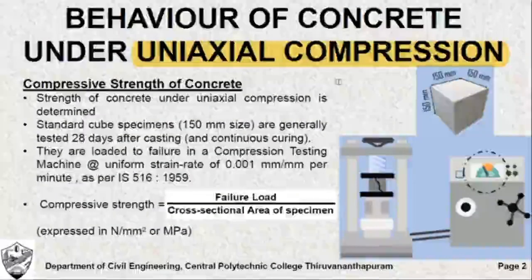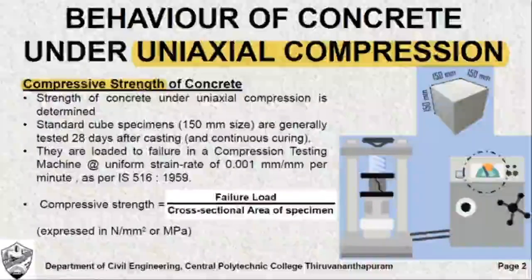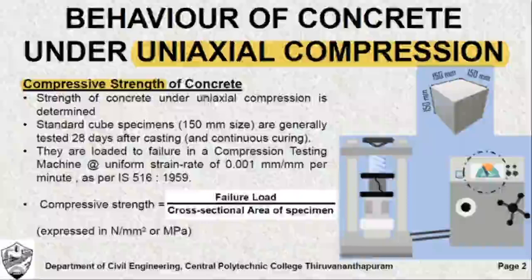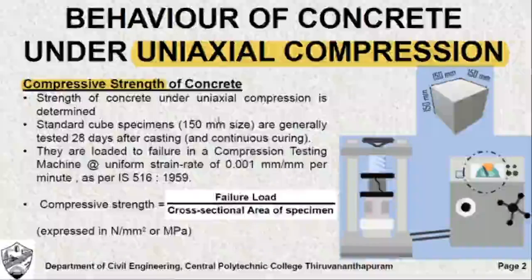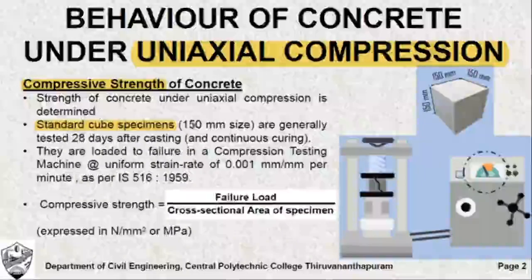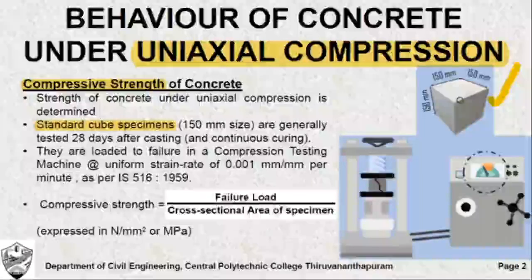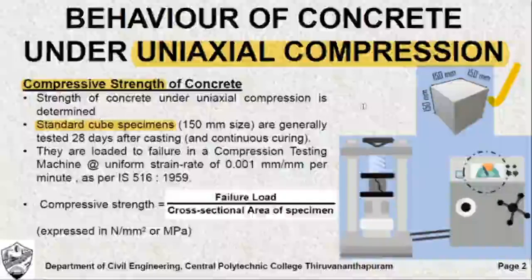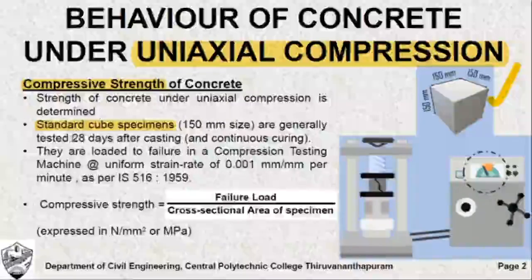To understand uniaxial compression, let us first define compressive strength of concrete. By compressive strength of concrete, we find the strength of concrete when subjected to uniaxial compression. For this, we take standard cube specimens of concrete of size 150 mm, which are cast and subjected to continuous curing. The samples are taken out only after 28 days after casting.